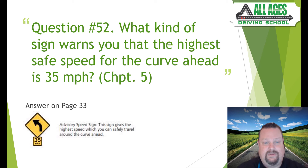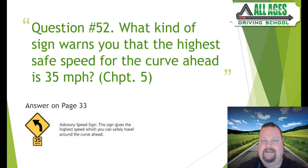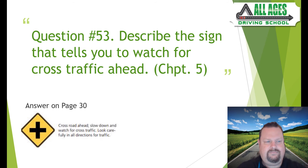Question number fifty-two: what kind of sign warns you that the highest safe speed for the curve ahead is 35 miles per hour? Chapter five, page 33. You will see an advisory speed sign — it gives the highest speed at which you can safely travel around the curve ahead. Also be aware of exit speed limit signs on freeways: if an exit says 25 mph, you must slow to that speed as you exit to avoid a ticket when merging onto the feeder road.